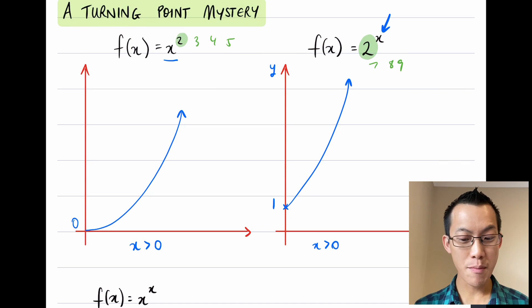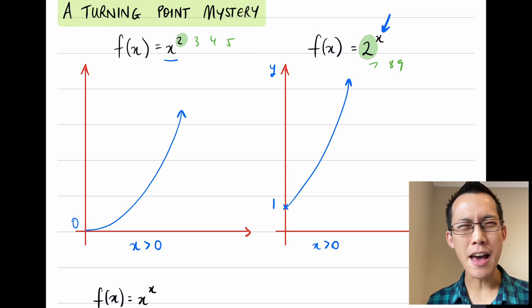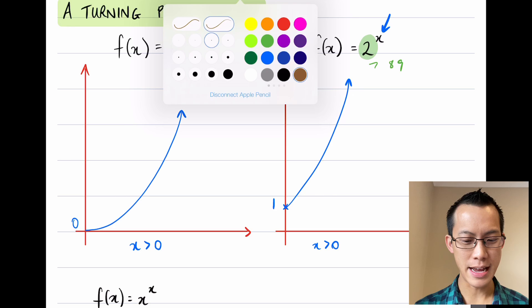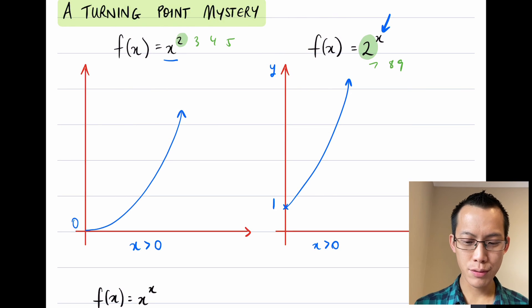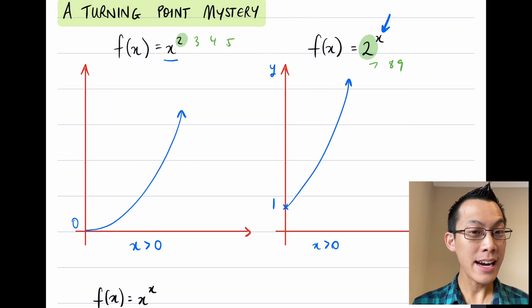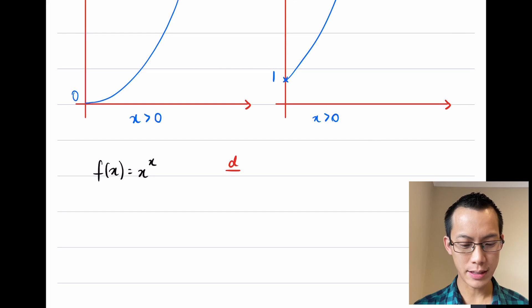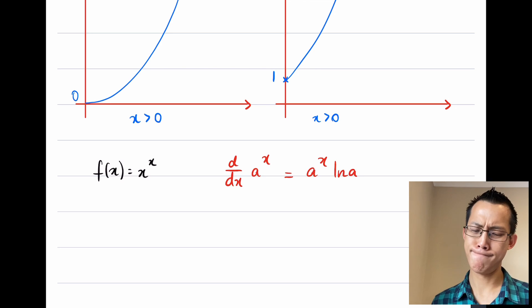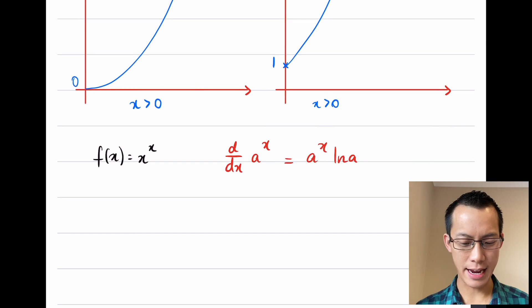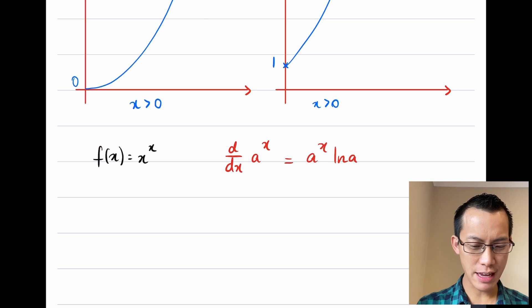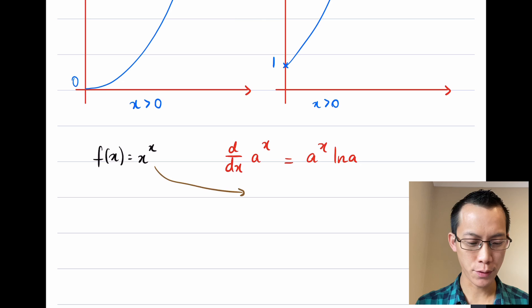I can then say, well, maybe it's a little bit more like the function on the right. Maybe I should treat this more as an exponential. When we have 2^x, or a^x, we know that the derivative of a^x is going to be a^x log(a). Would this work? Could I try this out with this function?